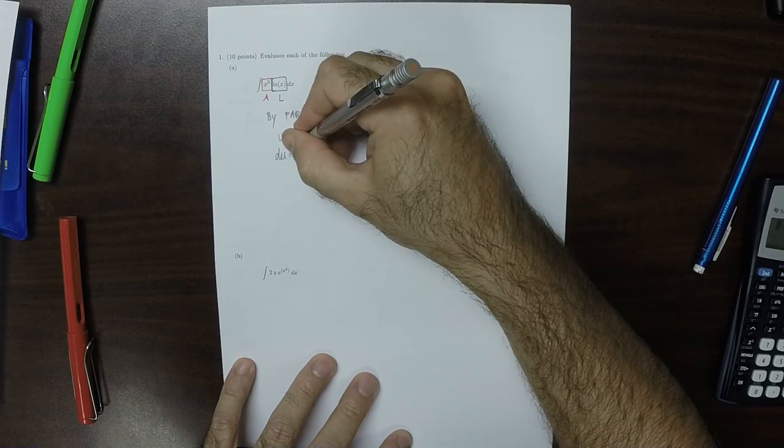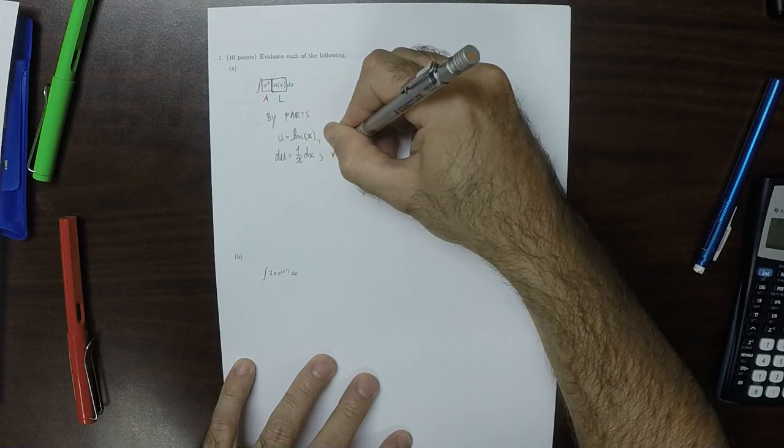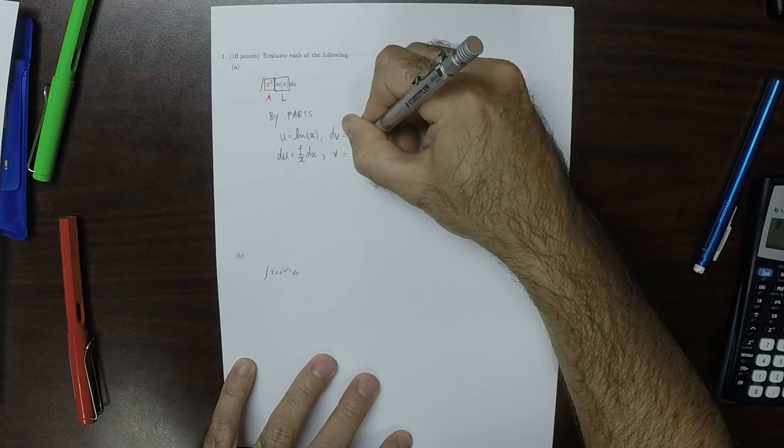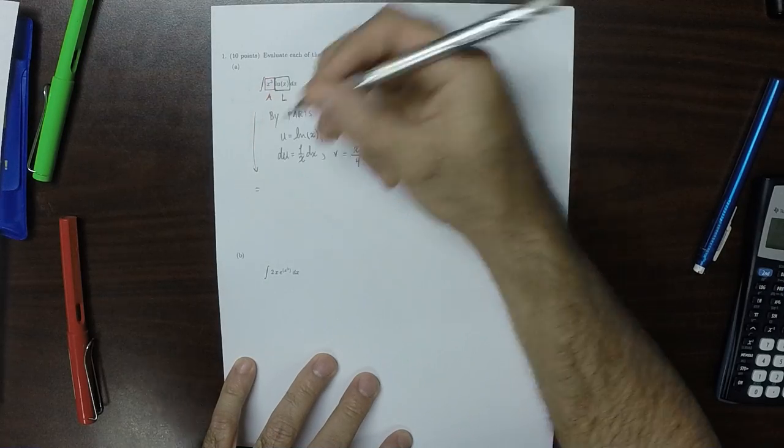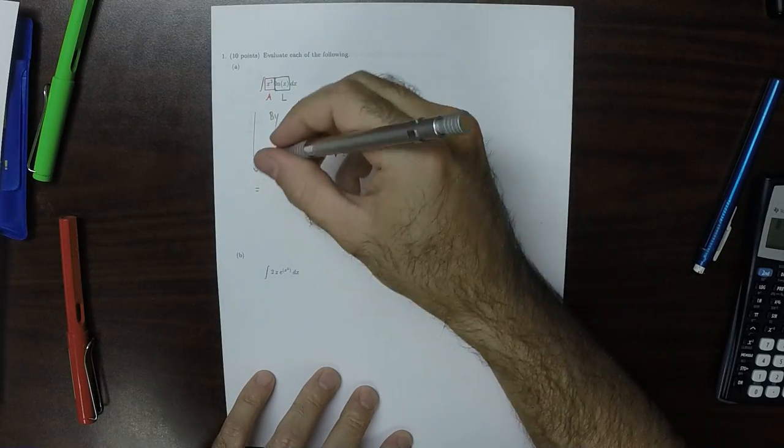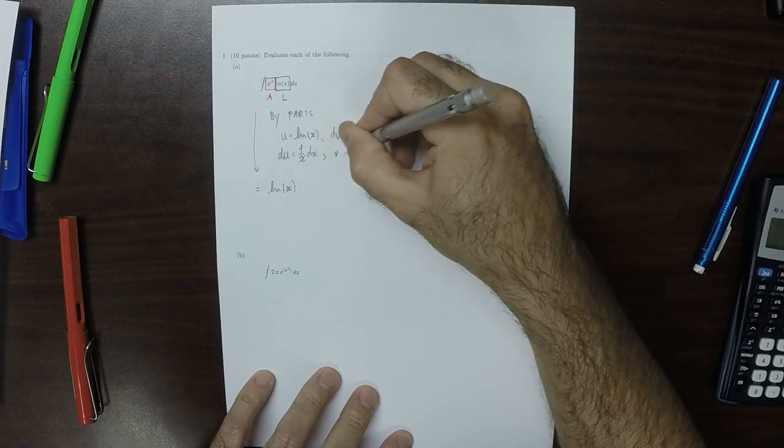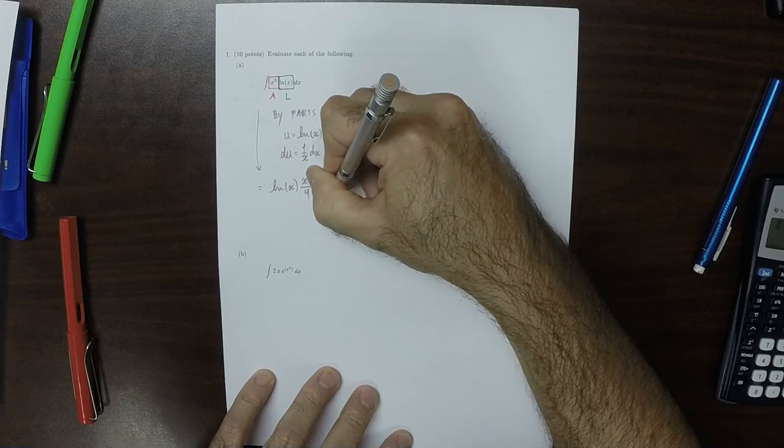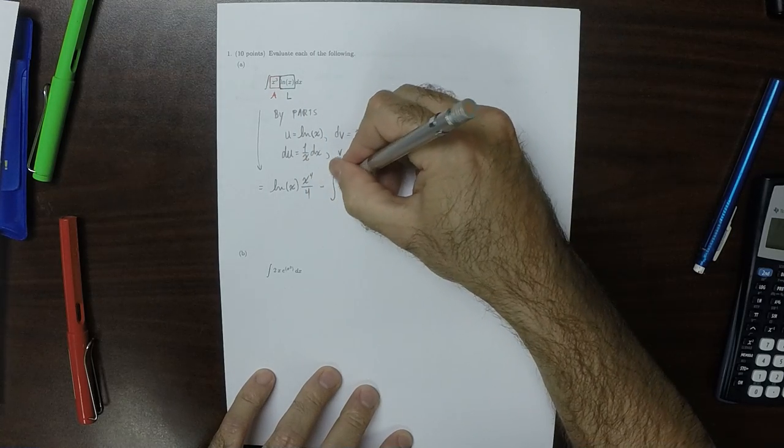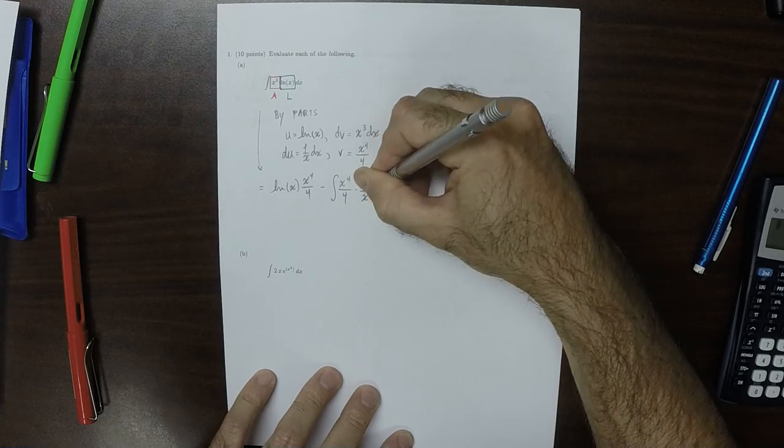So du is 1 over x dx and v is x to the 4 over 4. Then the right-hand side of integration by parts is log x times x to the 4 over 4 minus the antiderivative of x to the 4 over 4 times 1 over x dx.